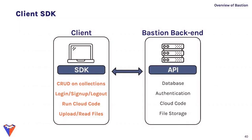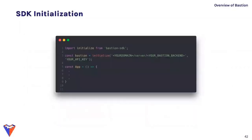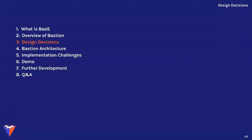The client SDK connects front-end applications to their respective Bastion backends. Using the SDK, a developer has access to methods providing CRUD actions on database collections, login, sign-up, and logout functionality, methods that run custom cloud code, and file storage access. The SDK requires downloading and importing it into the relevant file; the initialize method requires the domain name chosen during deployment and the unique API key, and returns an object granting all necessary methods to interact with the Bastion backend.